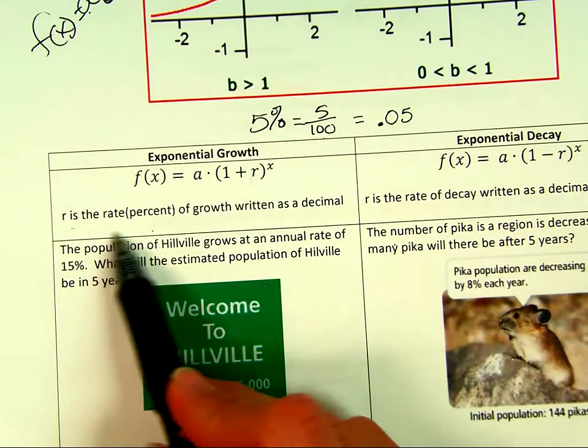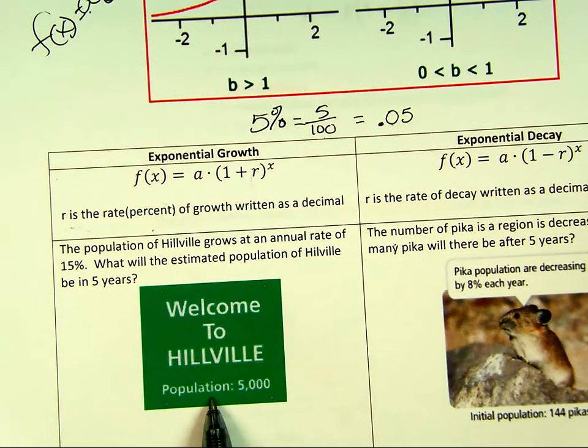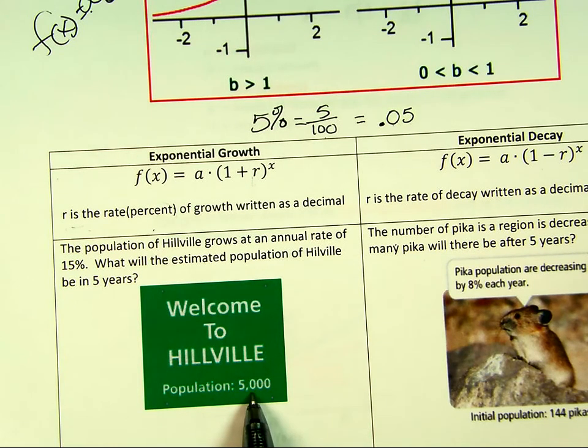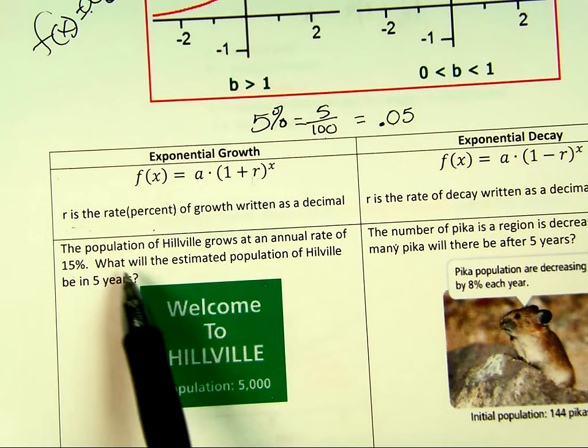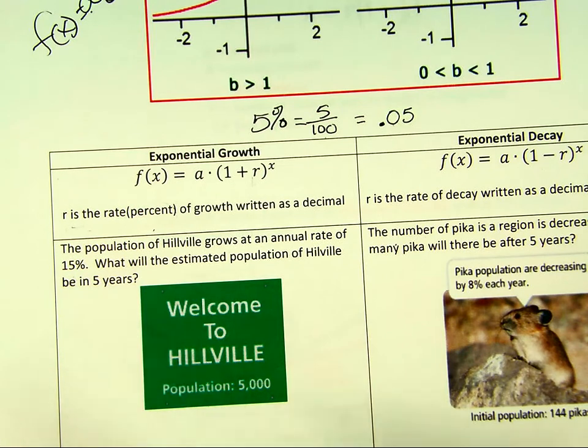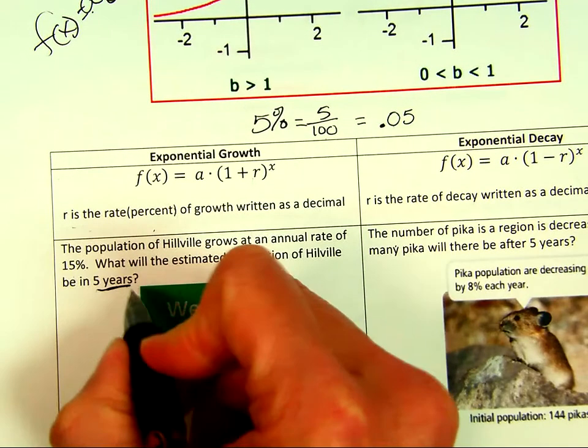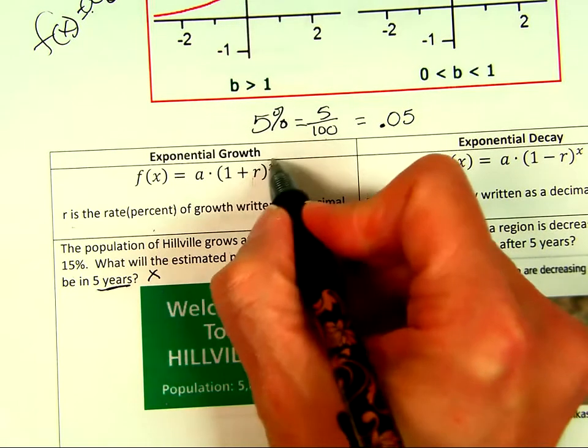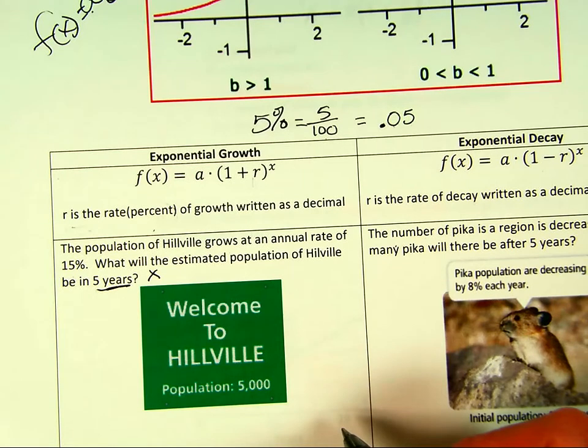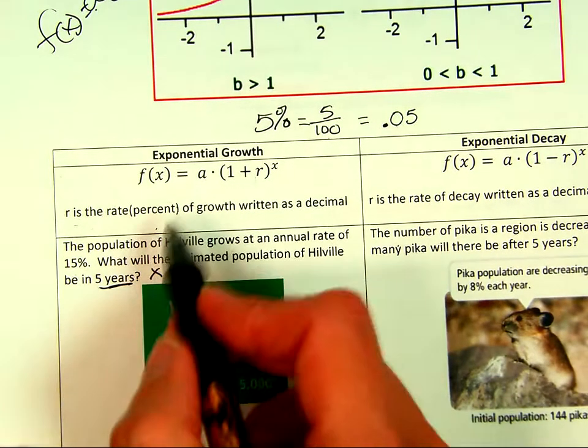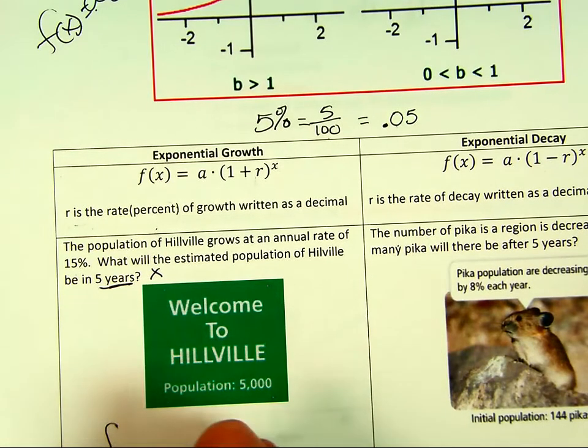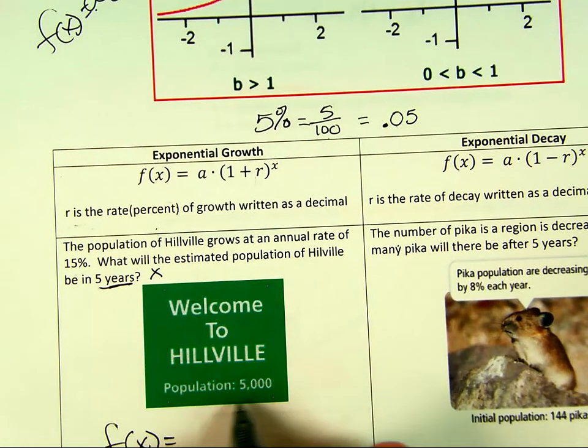A percent of increase or a percent of decrease. Hillville has a population of 5,000. The population is growing at an annual rate of 15%. What will be the estimated population in five years? The years is going to be our X. Sometimes it's years, it could be per minute for bacteria, per month, whatever the time frame is. So we're going to rewrite this equation. What value are we starting at? It said 5,000, so that is our initial value.